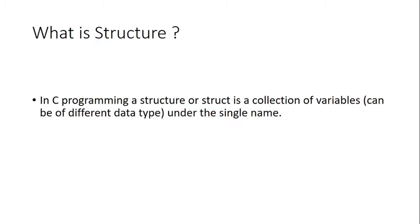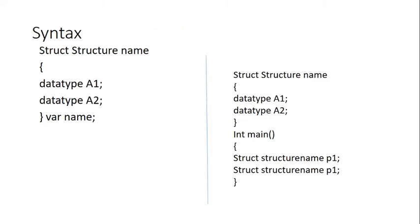Hello all, welcome to C programming learning. In this video we'll understand C structures. A struct is a collection of variables that can be of different data types under a single name. When it comes to a collection of variables in an array, you need to provide the same data type, but with a structure you can make a collection of different data type variables.